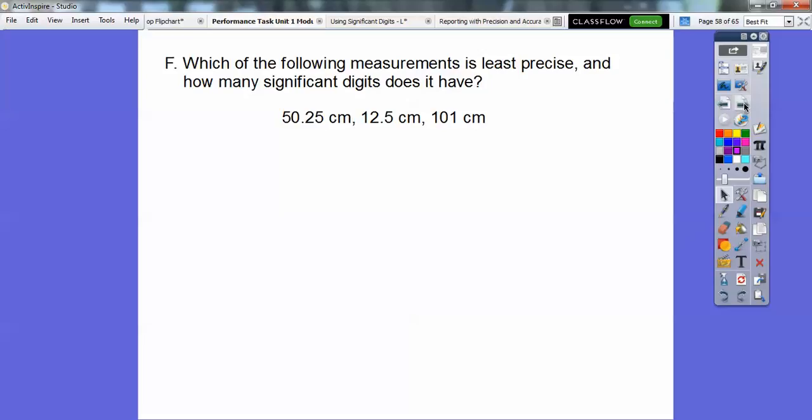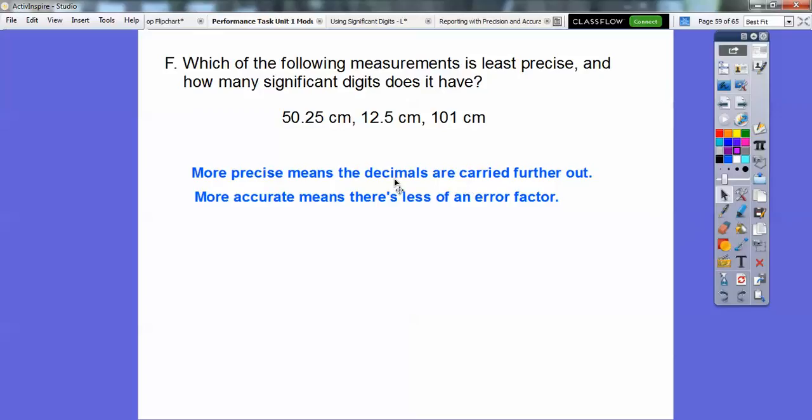So which of the following measurements is least precise, and how many significant digits does it have? Well, least precise. More precise means the decimals are carried out further. I just copied this from a lesson I did earlier. So this one's the most precise. This one's the second most precise, the decimals that are carried out further. This doesn't have any decimals, so this one's the least precise. How many significant digits? This time I count that zero because it's in between two non-zero digits. So 101 is the least precise, and it has three significant digits. This one's the most precise right here. It doesn't mean it's the most accurate. The most accurate means there's the less error factor.